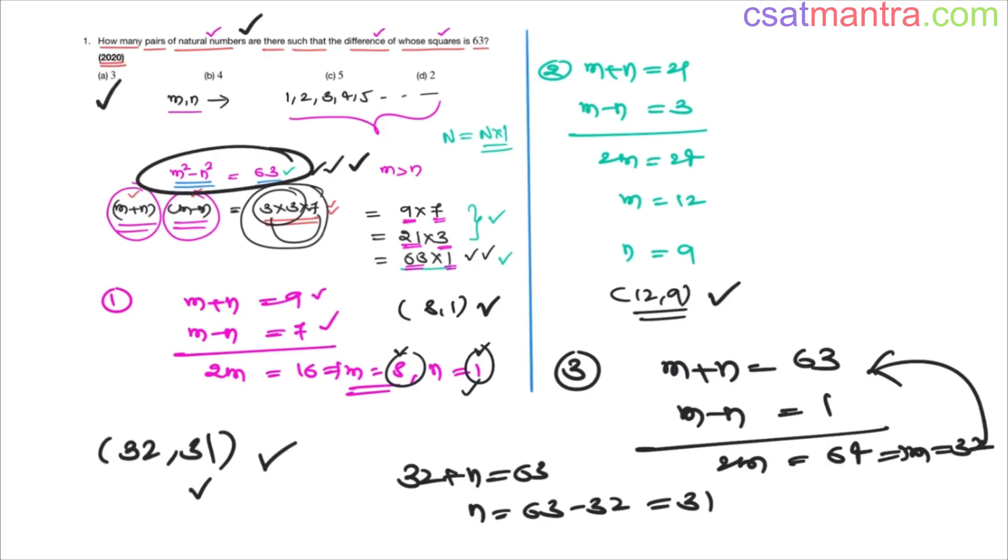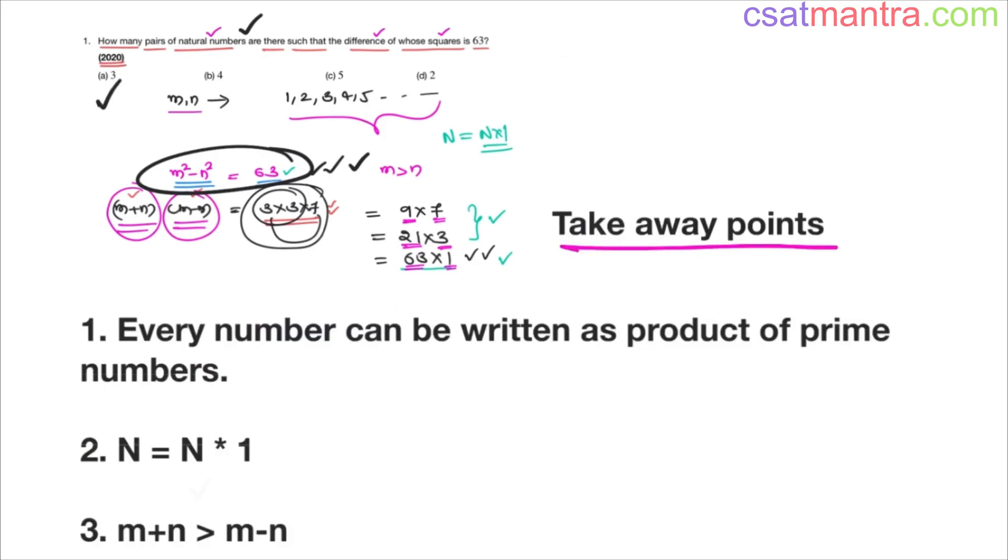The takeaway points from this problem: every number can be written as product of prime numbers. Prime numbers, please write the number given as product of prime numbers.